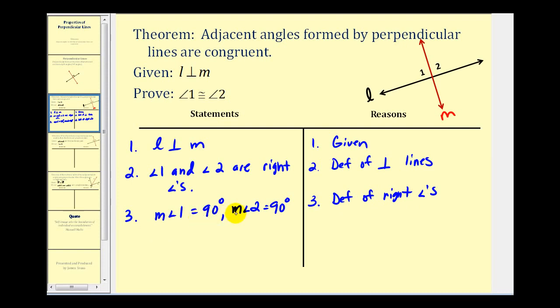And since the measure of angle 1 and the measure of angle 2 are both equal to 90 degrees, we can conclude that angle 1 is congruent to angle 2, which is what we were trying to prove. This is by definition of congruent angles.